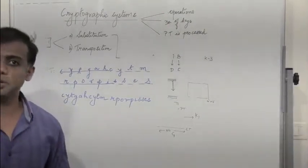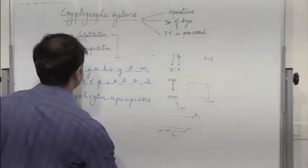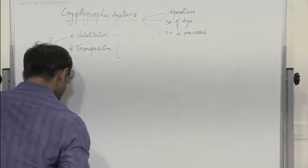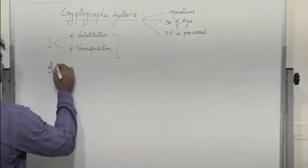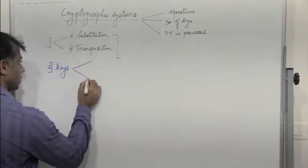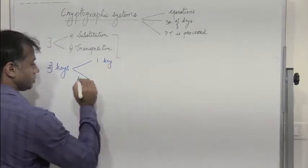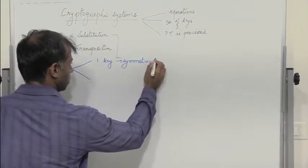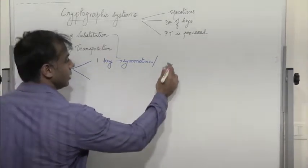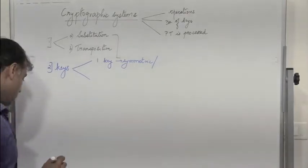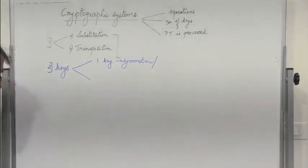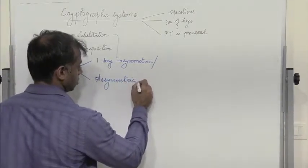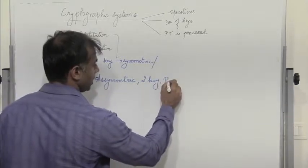The way in which the operation is performed can either be substitution or transposition. The next category is the number of keys used. Based on the number of keys used, it can be one key, which is referred to as symmetric cipher. They are also called single key, secret key, or conventional encryption. Or if the sender and receiver use different keys, it is referred to as asymmetric, two key, or public key encryption.